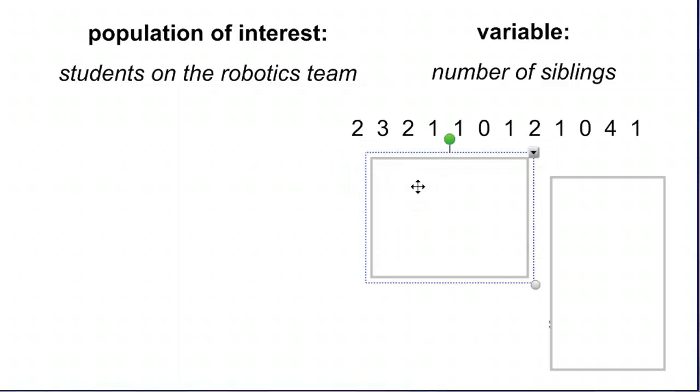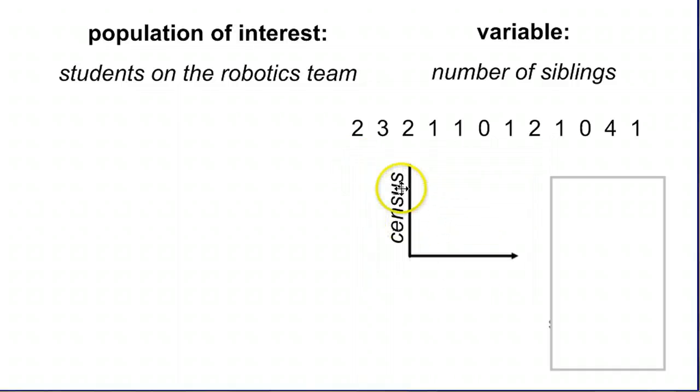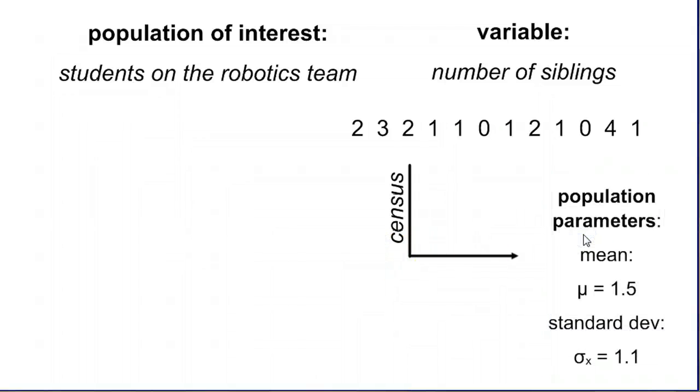With that data, we can figure out, with an entire census, the population. Now, the term census, we usually think of that when we're surveying the entire population of the United States. Every 10 years we have to do a census. However, a census is really just a way of saying ask everybody. It doesn't have to mean the United States government asking everyone, it could be you asking the entire robotics team of 12 people. So we take a census, we ask all 12 people, and we can find some parameters.